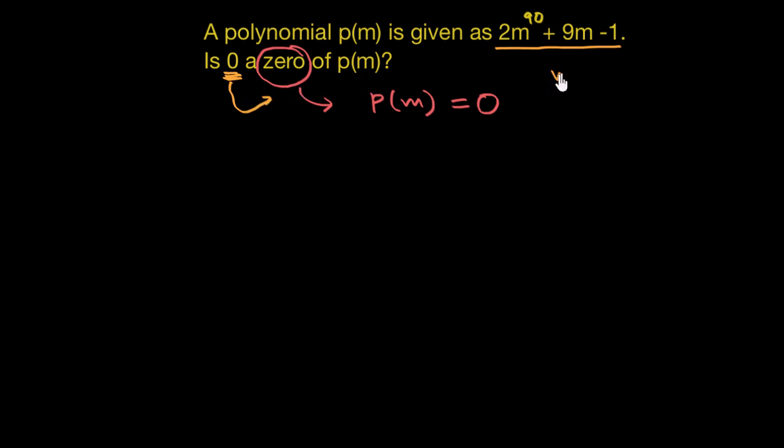If on substituting m as 0 in this given polynomial, the value of this polynomial would turn out to be 0. Let's try and see that.